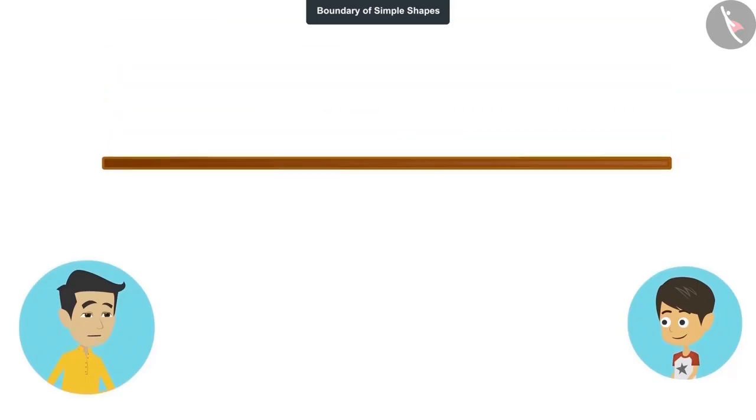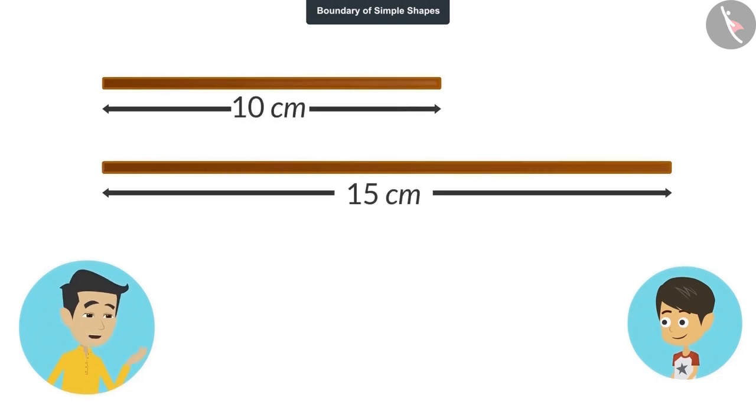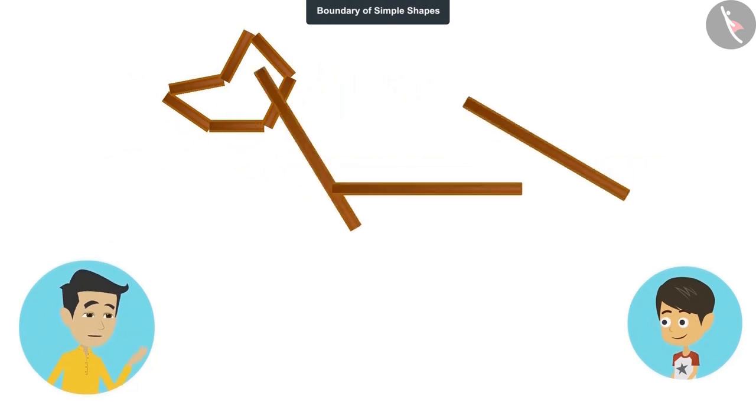See, let's take two thin sticks of different sizes. The short stick is 10 centimeters long and the long one is 15 centimeter long. Now let's cut the short stick into six pieces and make a shape. And now cut the long stick into three pieces and make another shape.